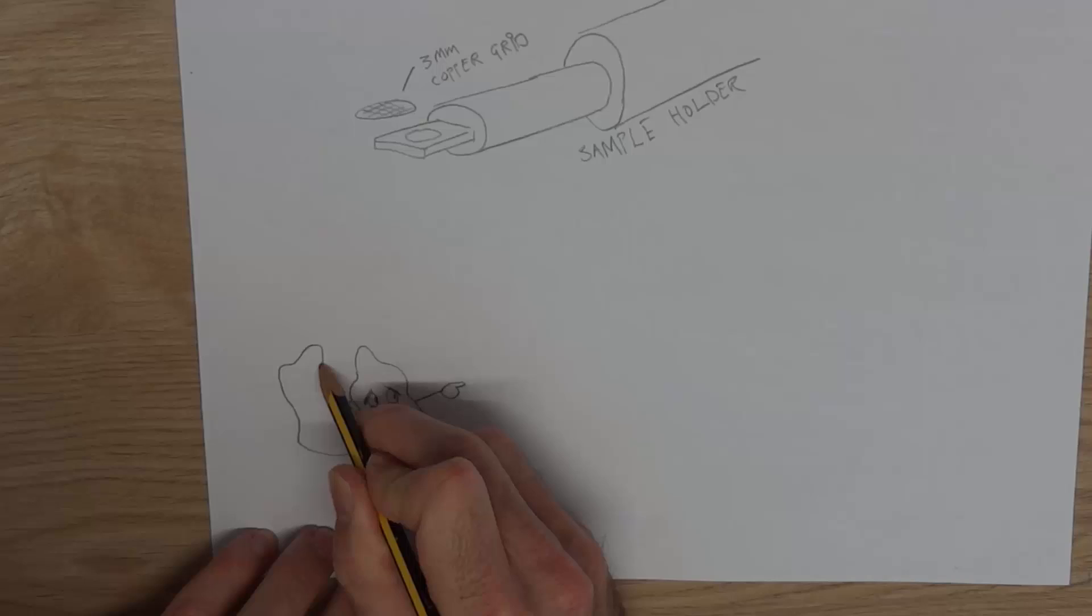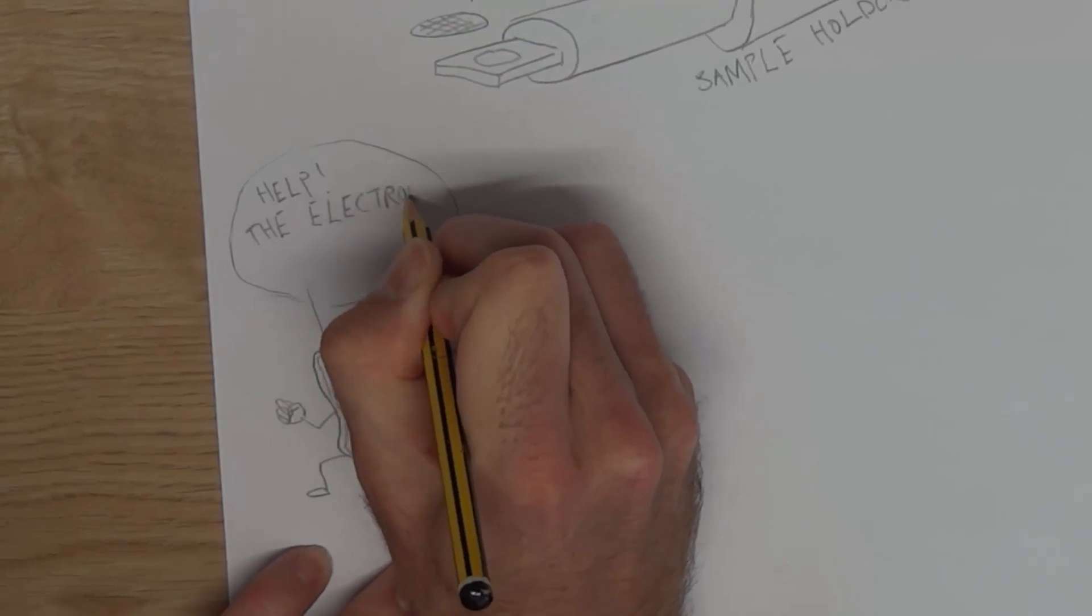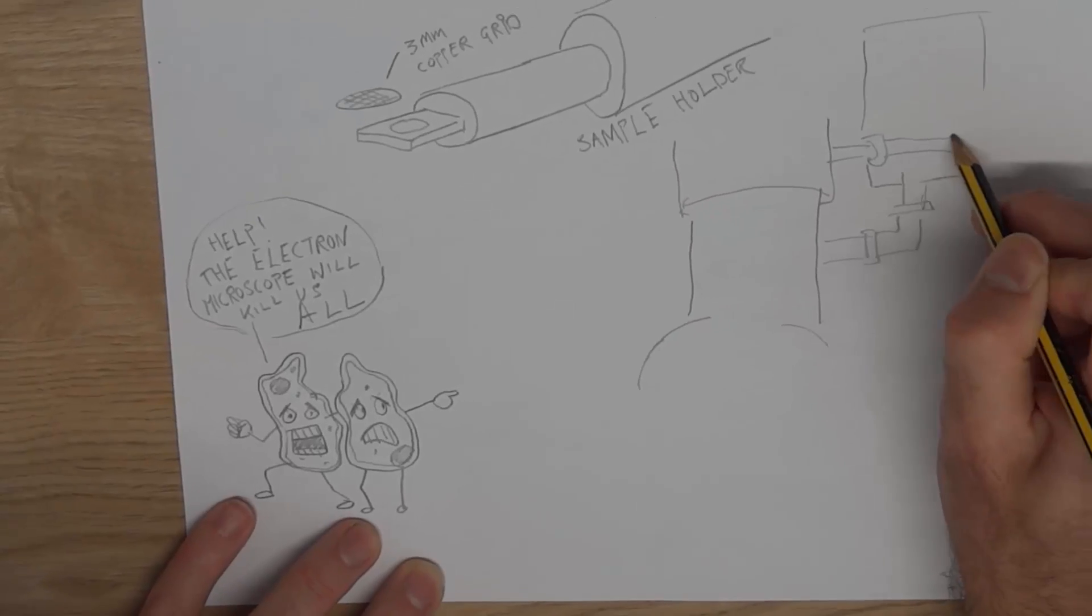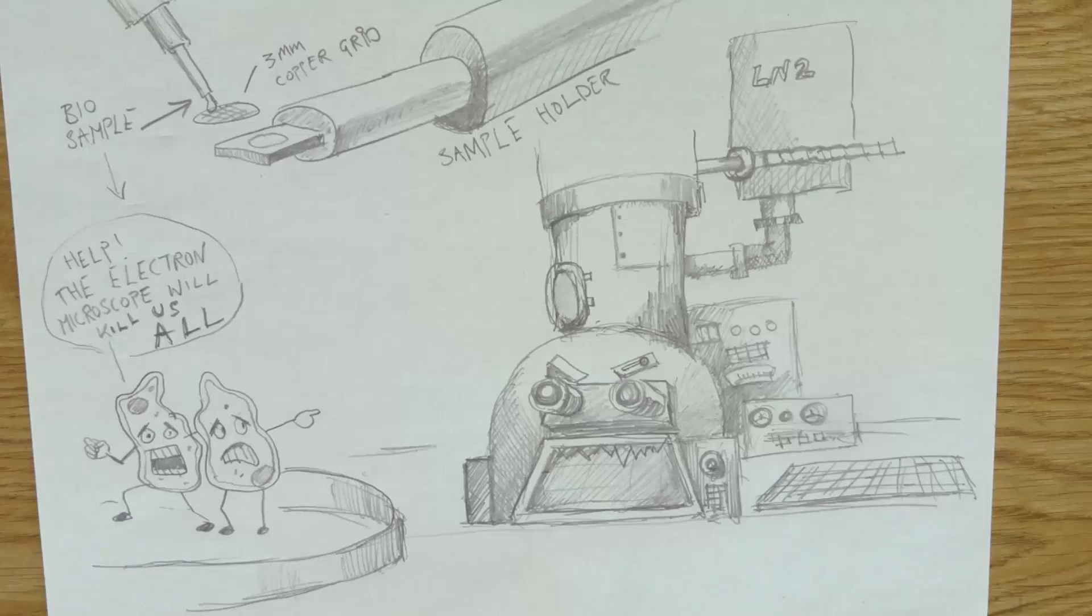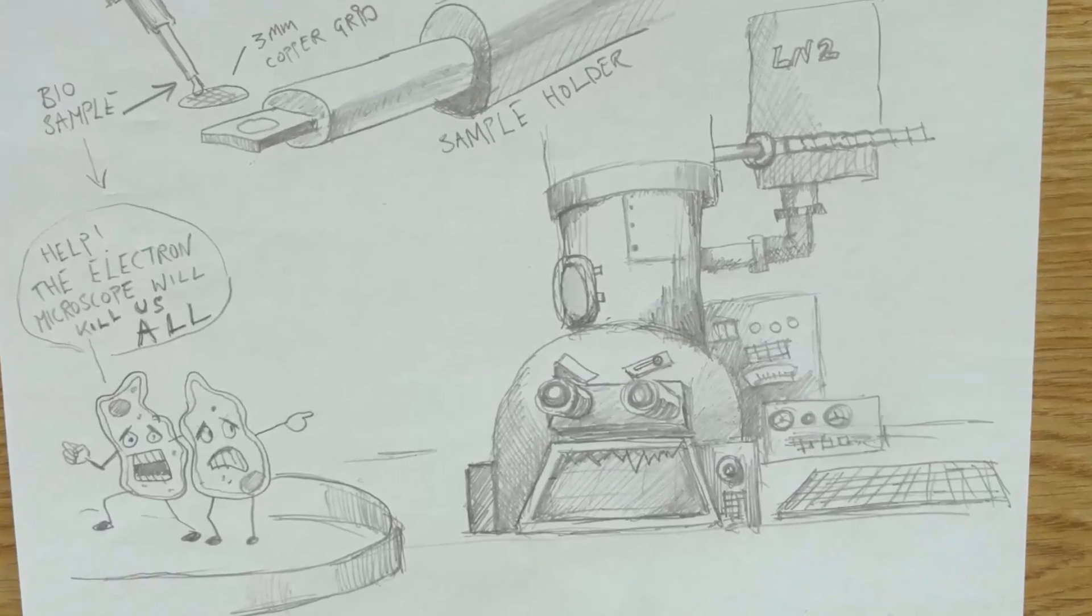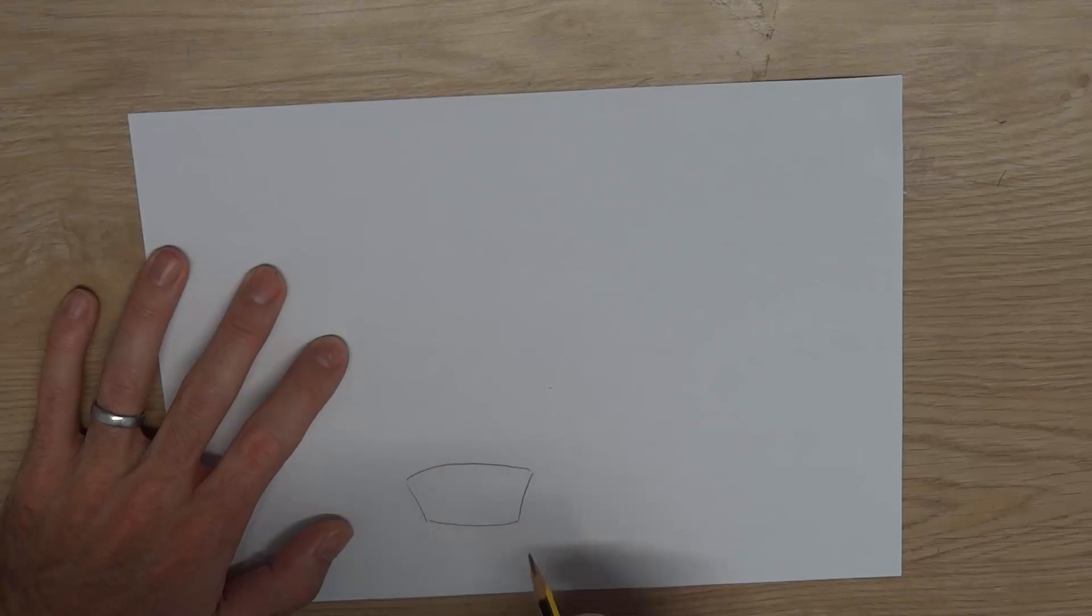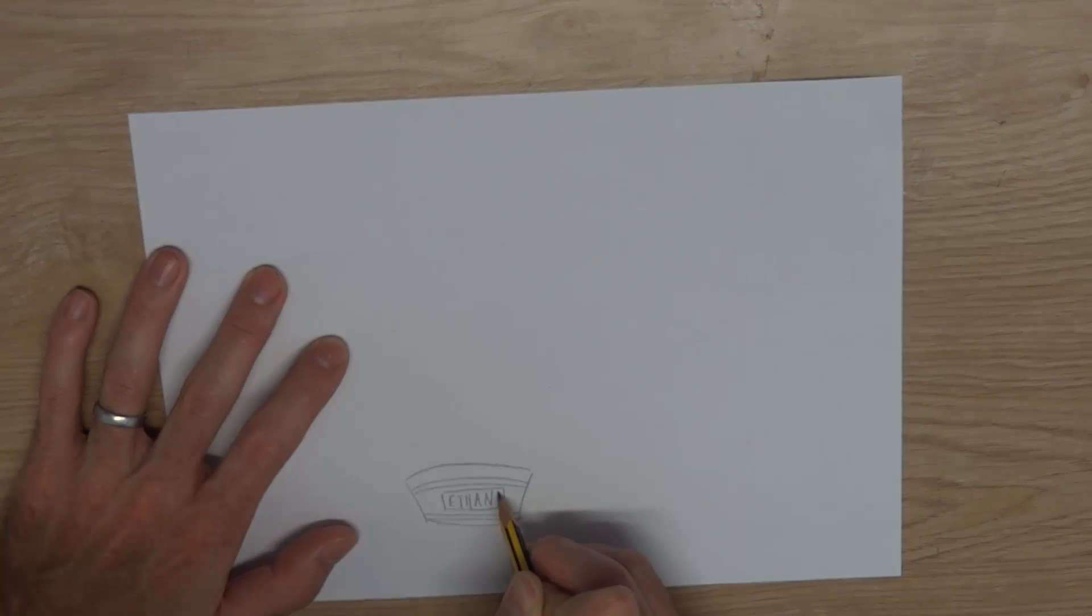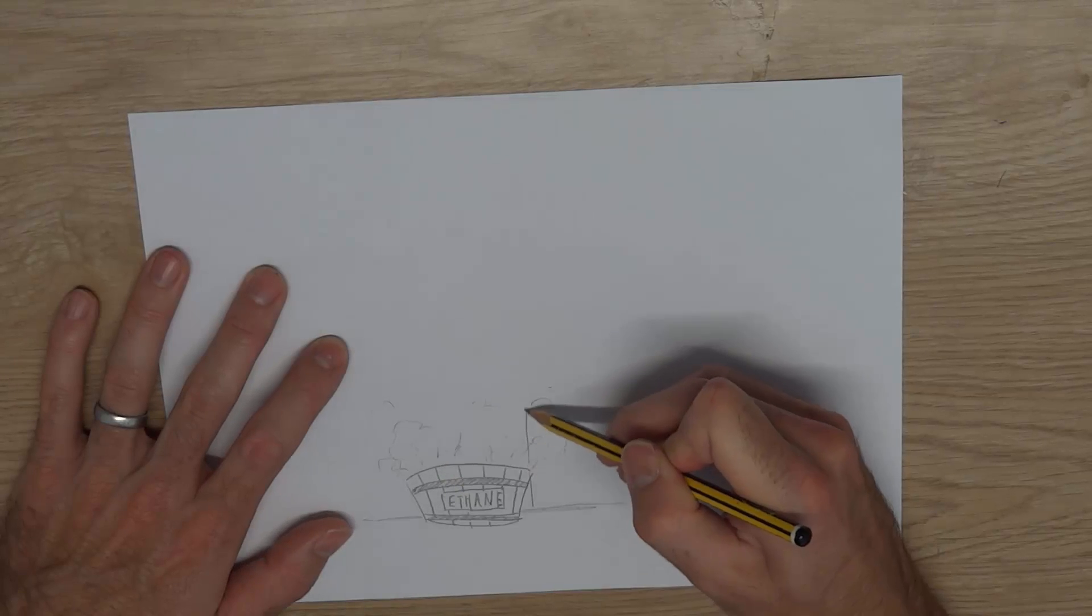However, the sample chamber of an electron microscope is a harsh environment for biological cells. High vacuum and the focused electron beam will quickly destroy most living cells, so samples must be chemically fixed or frozen. It is generally recognised that rapid freezing is the best technique for preparing samples for electron microscopy.